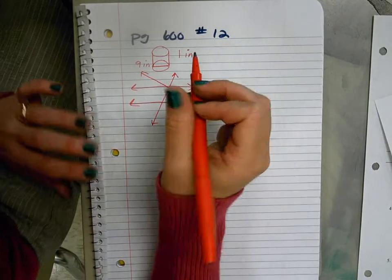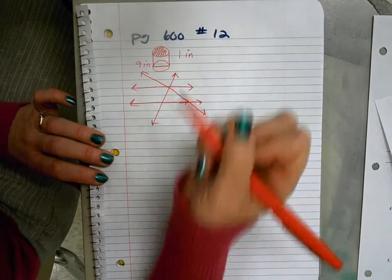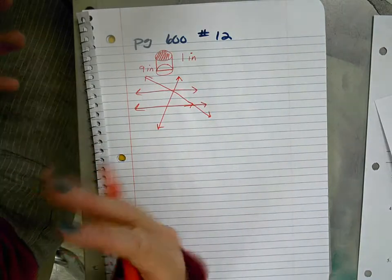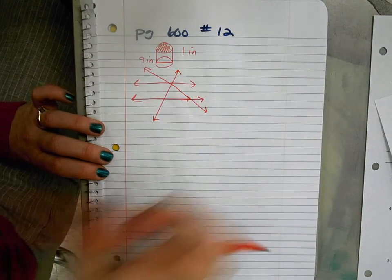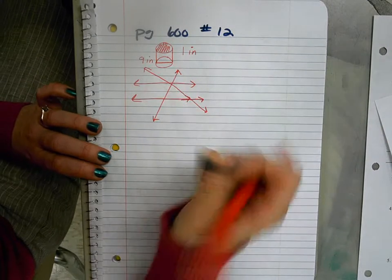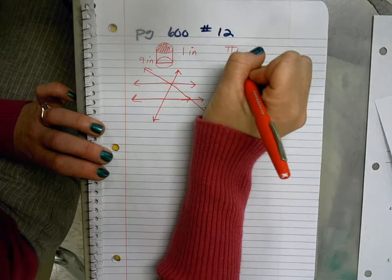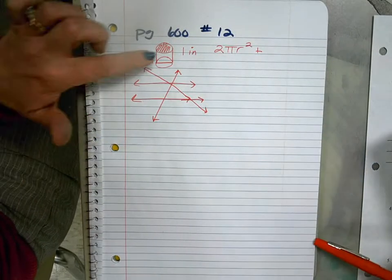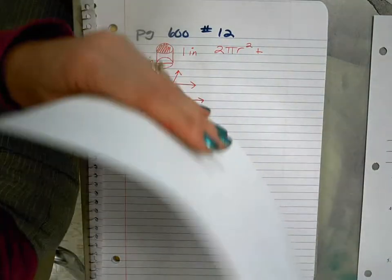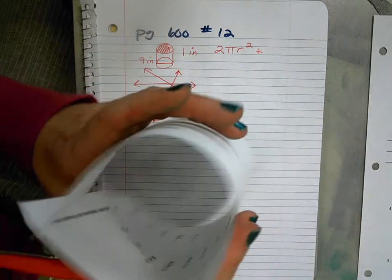Again we're finding surface area, the outside of that shape, how much plastic was used to make it if it was a container, how much wrapping paper is used if we're going to wrap it. And it's comprised of two circles. Area of a circle is πr² and there's two of them.